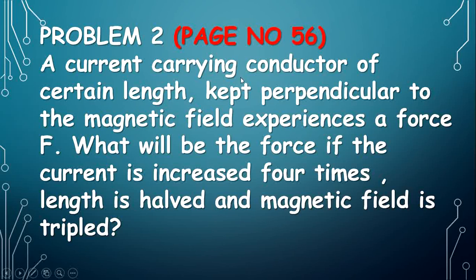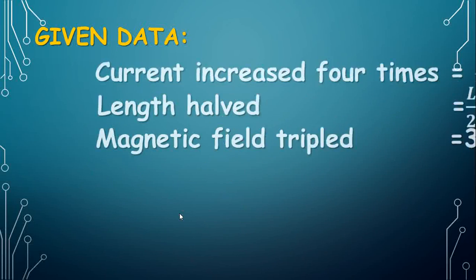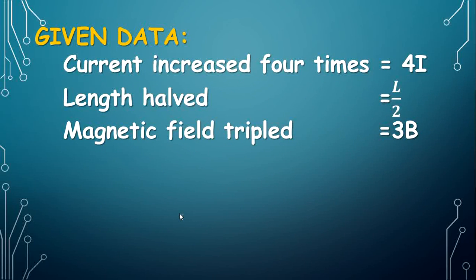Problem 2, page number 56. A current carrying conductor of certain length kept perpendicular to the magnetic field experiences a force F. What will be the force if the current is increased 4 times, length is halved, and magnetic field is tripled? Given data: current increased 4 times equals 4I, length halved equals L by 2, magnetic field tripled equals 3B. To find: force.